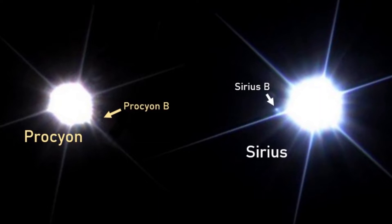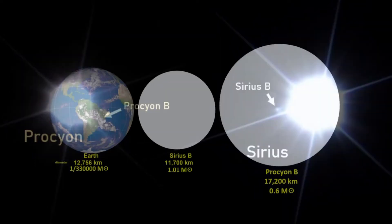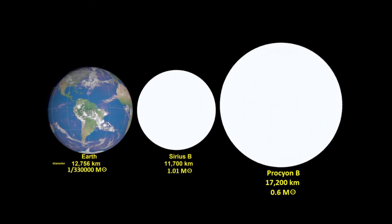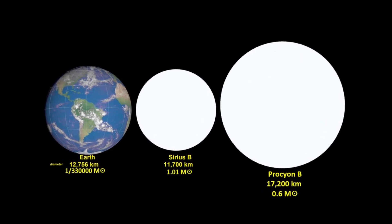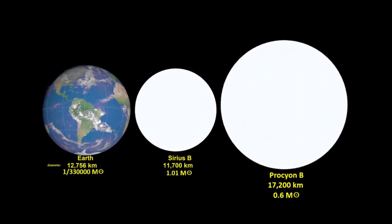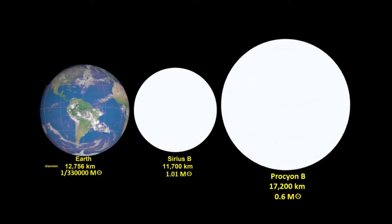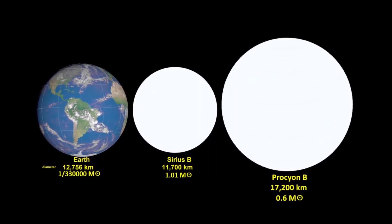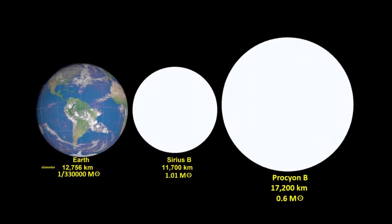Not only this but at 0.6 solar masses, Procyon B is considerably less massive than Sirius B, however the peculiarities of degenerate matter ensure that strangely it's actually larger in volume than its more famous neighbor, with an estimated radius of 8,600 kilometers versus around 5,800 for Sirius B.